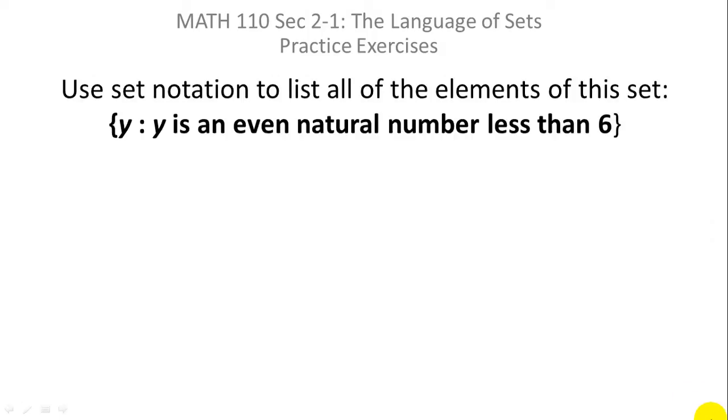Use set notation to list all the elements of this set. Now this is written in what we call set builder notation. It's read the set of all y, the colon is read as such that, so it's a set of all y such that y is an even natural number less than six.